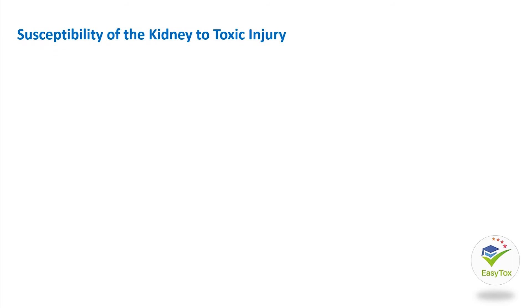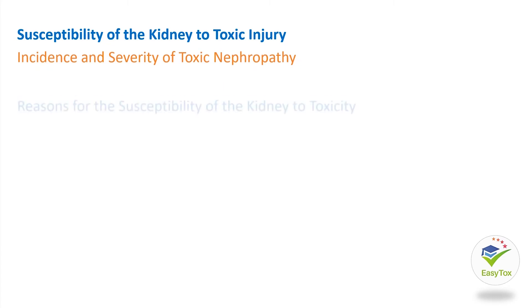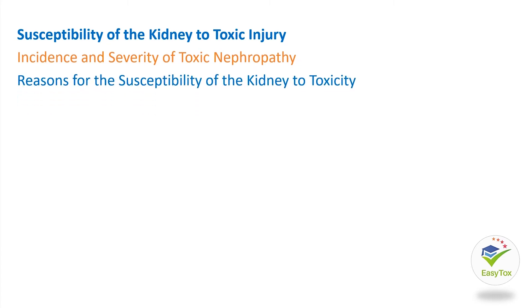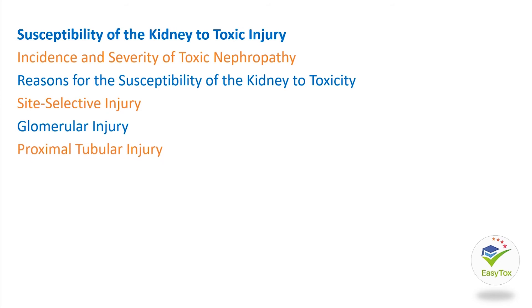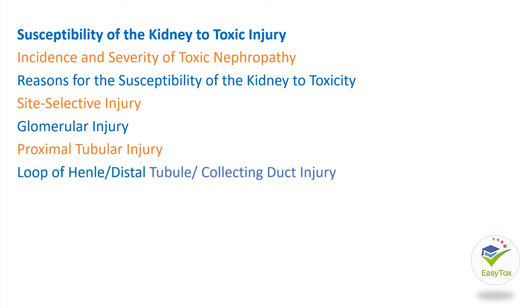Next is susceptibility of the kidney to toxic injury, which includes incidence and severity of toxic nephropathy, reasons for the susceptibility of the kidney to toxicity, site-selective injury, glomerular injury, proximal tubular injury, loop of Henle, distal tubule, collecting duct injury, and papillary injury.